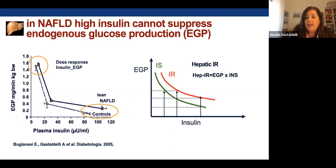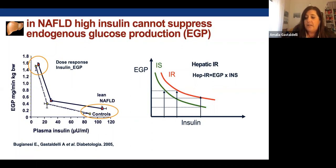This is a sign of insulin resistance. The relationship between insulin and glucose production is a hyperbolic curve, so by measuring the product of glucose production times insulin, we can find a well-validated index of hepatic insulin resistance.